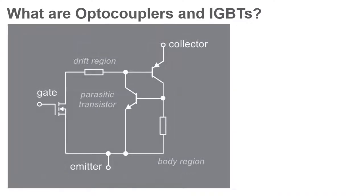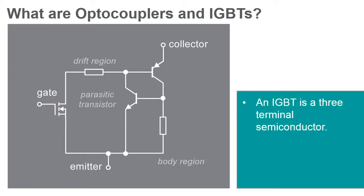An insulated gate bipolar transistor, or IGBT, is a three-terminal power semiconductor device that is primarily used as an electronic switch.